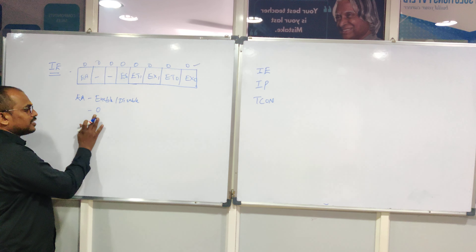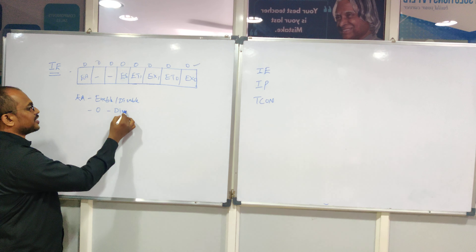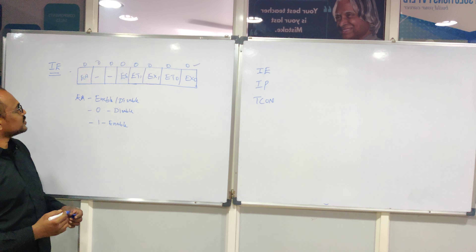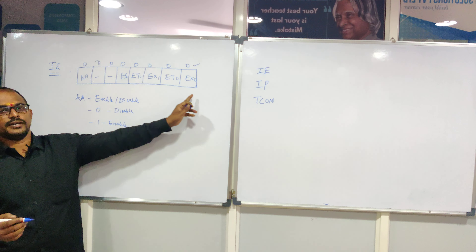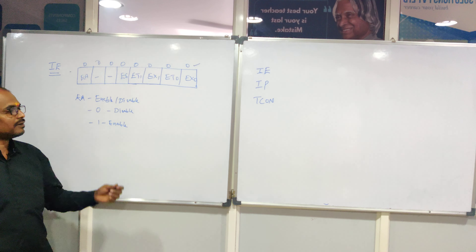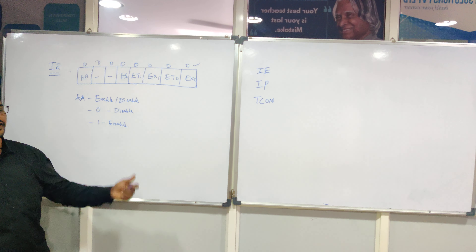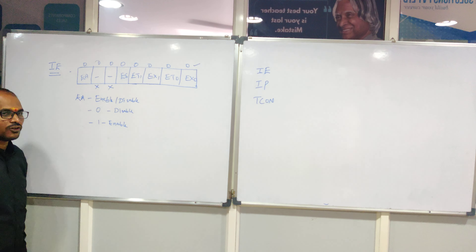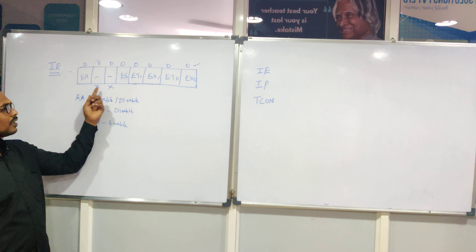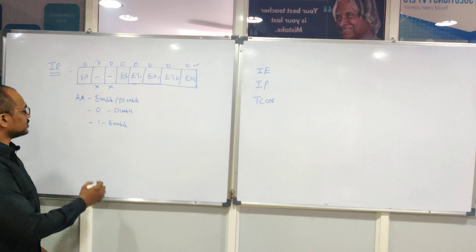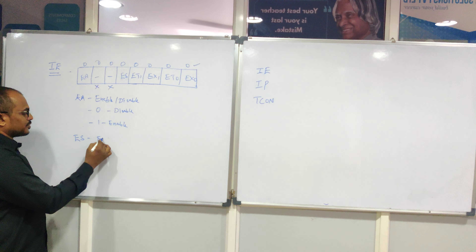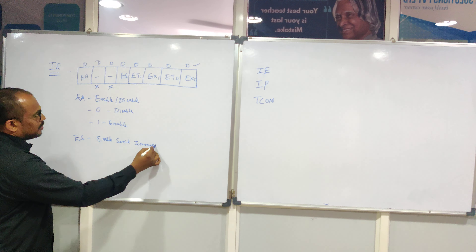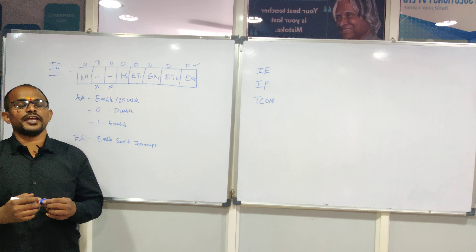The logic of the EA bit decides whether you are enabling or disabling all interrupts. For logic 0, it disables all interrupts; for logic 1, it enables all interrupts. EA is the MSB and EX0 is the LSB of the IE register. There are also two unused bits where you can assign don't-care logic, either 0 or 1.